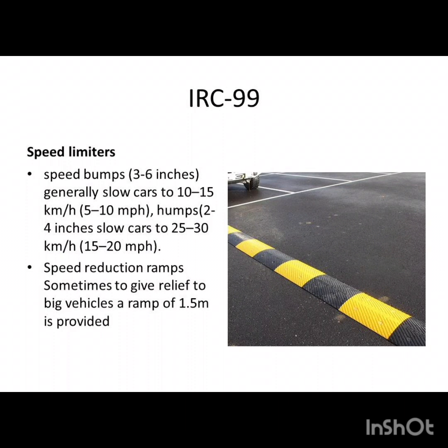Another type of speed reduction device is the speed reduction ramp. Speed reduction ramps are used when heavy vehicles are passing, as speed bumps cause great inconvenience to them. These are the various types of road appurtenances discussed. Thank you for listening — visit again, thank you very much.